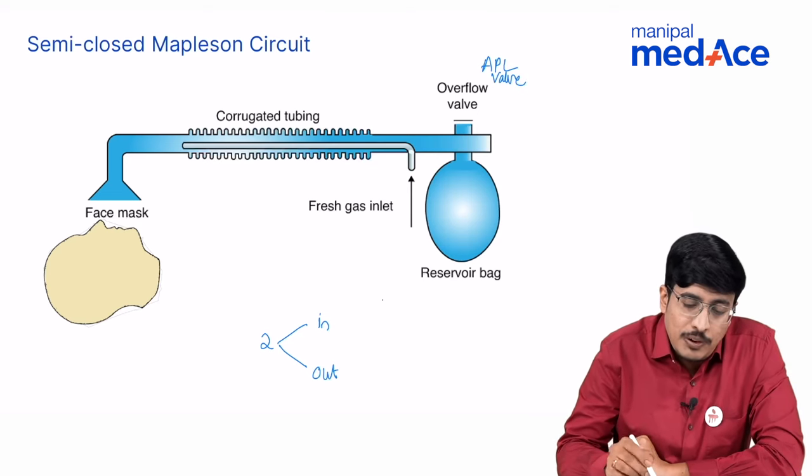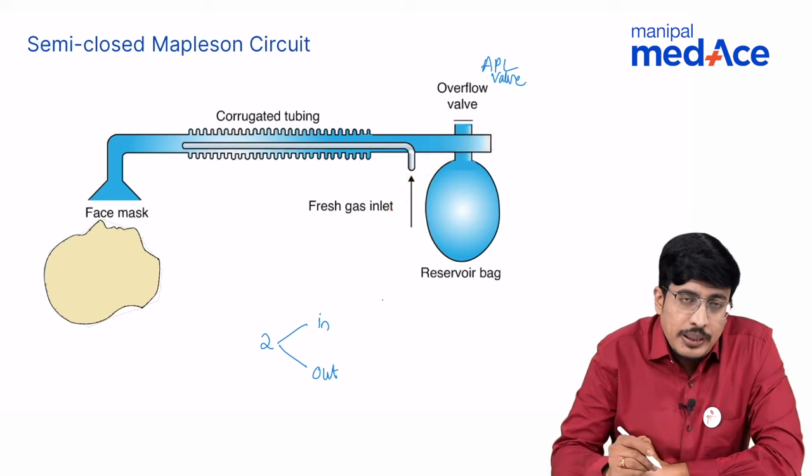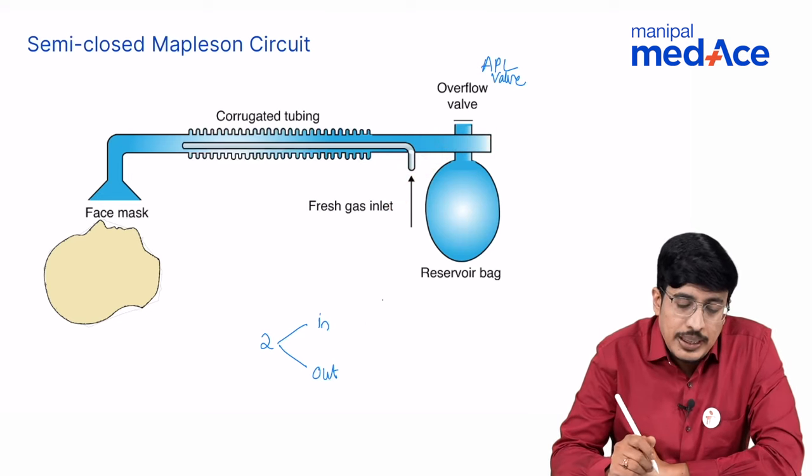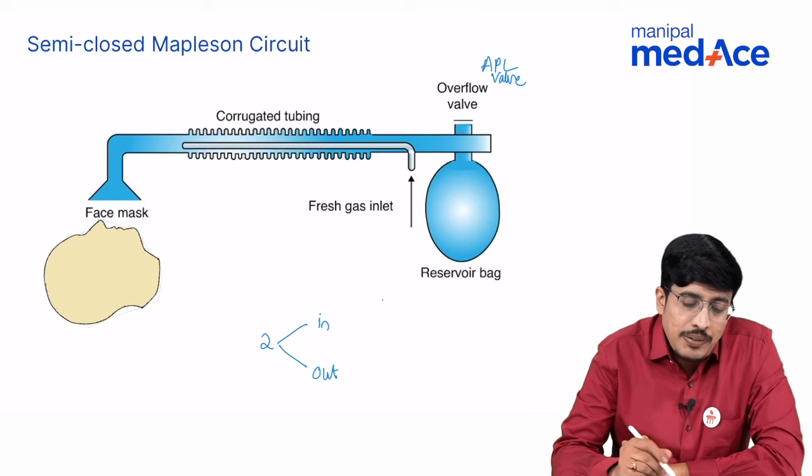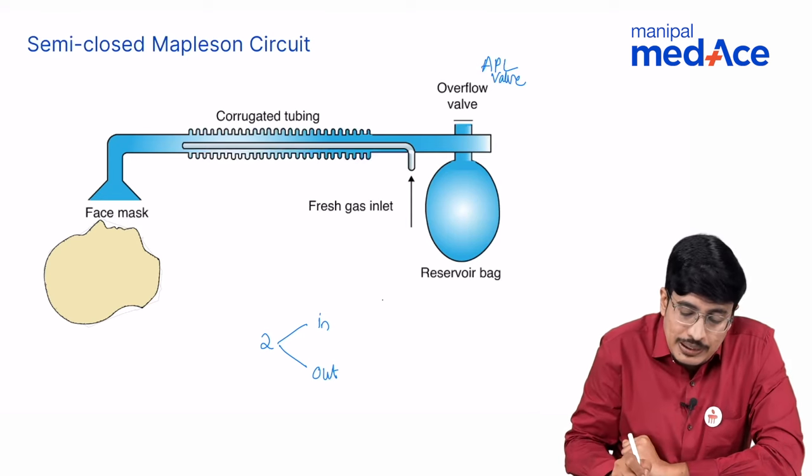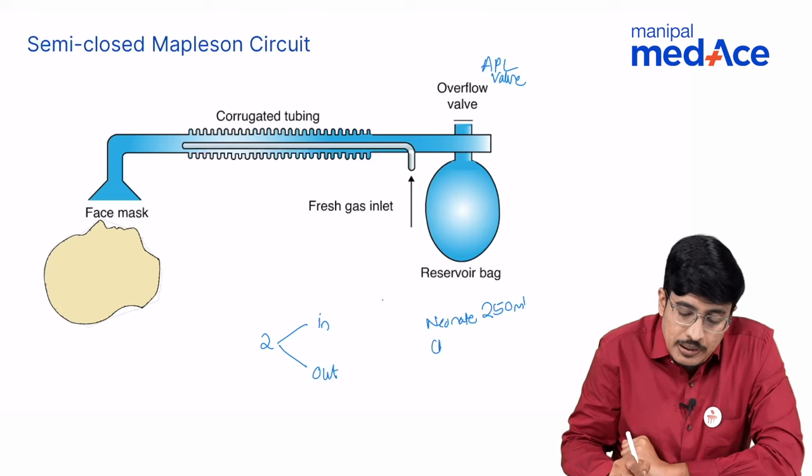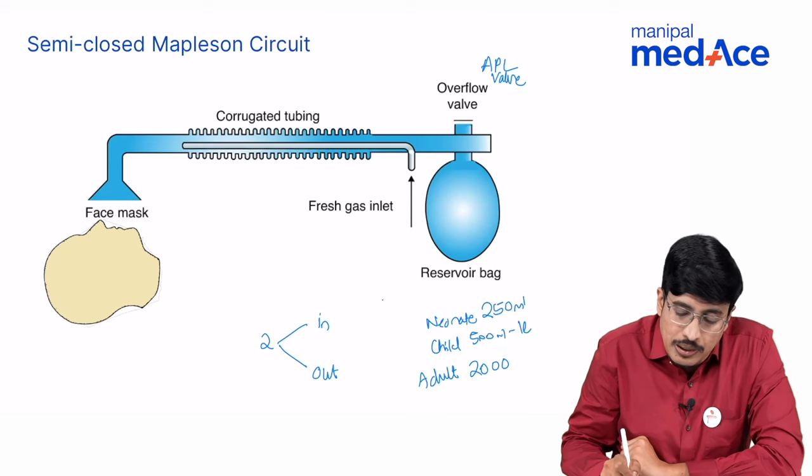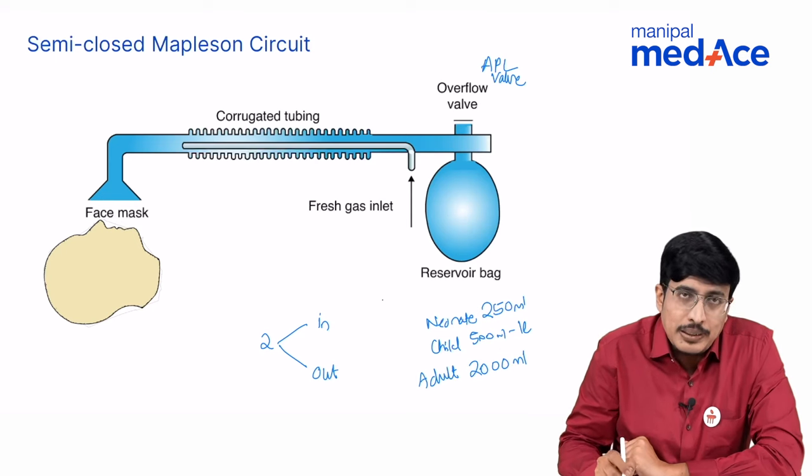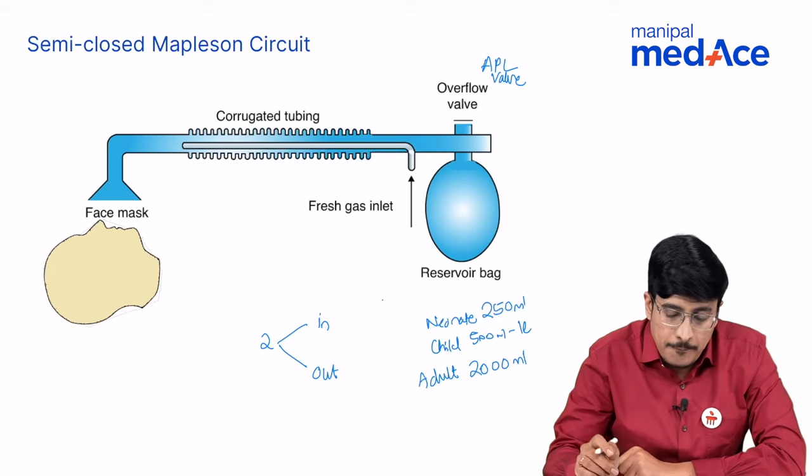Also there is provision of a reservoir bag that helps us deliver the fresh gases at a higher tidal volume. This reservoir bag is available in different sizes. For example, for a neonate we use 250 ml bag, for a child we may use 500 ml or a 1 liter bag, and for an adult unit we generally use a 2 liter bag or a 2000 ml bag.